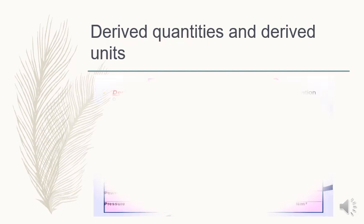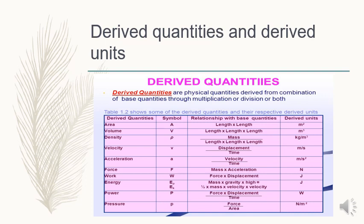Derived quantities and derived units. The table shows some derived quantities and their derived units. In this table you have seen that area is length squared in meter square, volume is length cubed in meter cube, density is mass per unit volume in kilogram per meter cube, velocity is displacement upon time in meter per second, acceleration is velocity upon time in meter per second square, force is mass times acceleration in Newton, work is force into displacement in Joule, and so on. These are the derived quantities which are generated by the combination of base quantities.